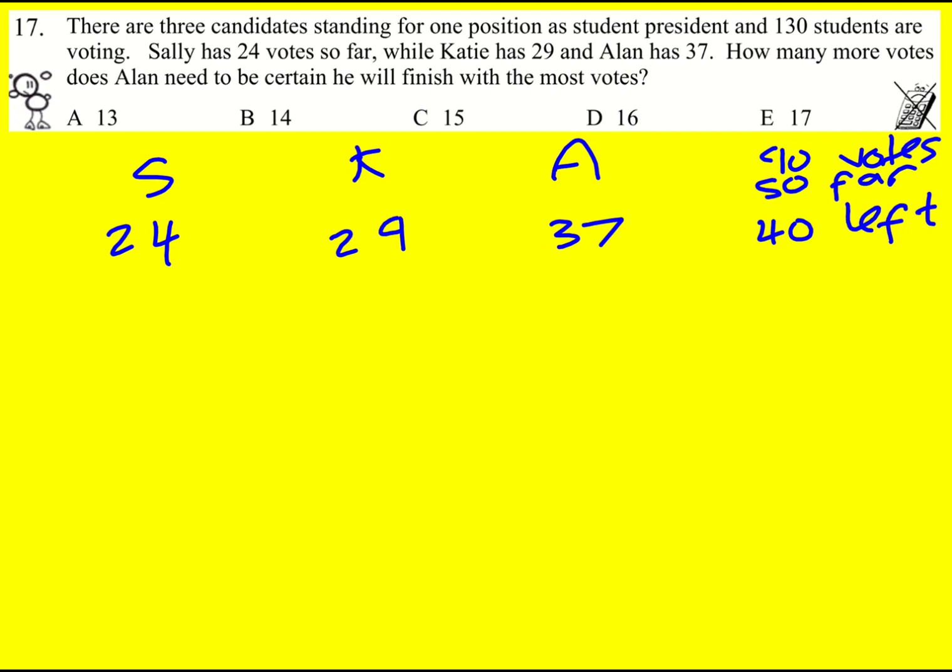I'm going to show you two ways to do this question now. I did it by visualizing what could potentially happen. Sally is too far behind so the main challenge is Katie.